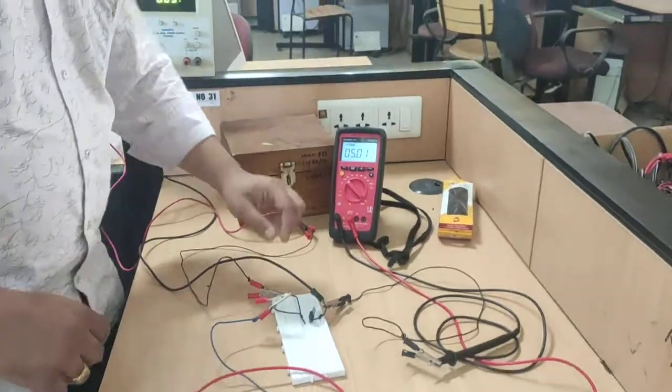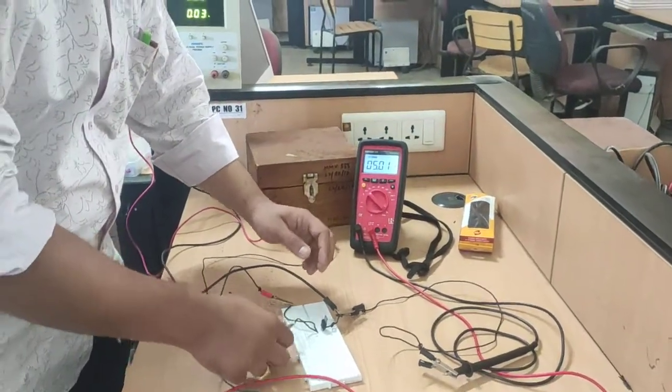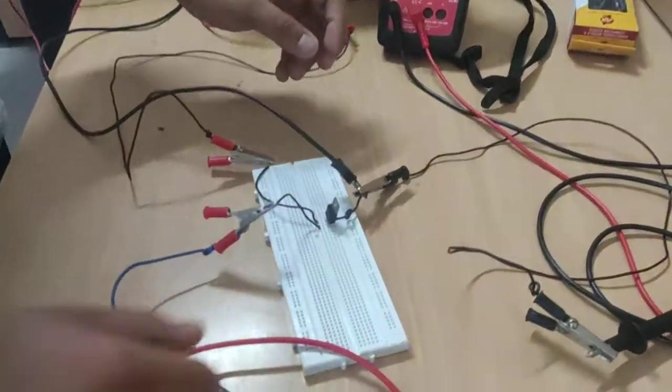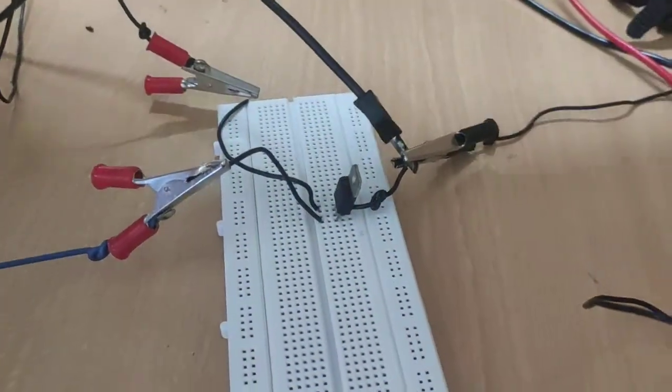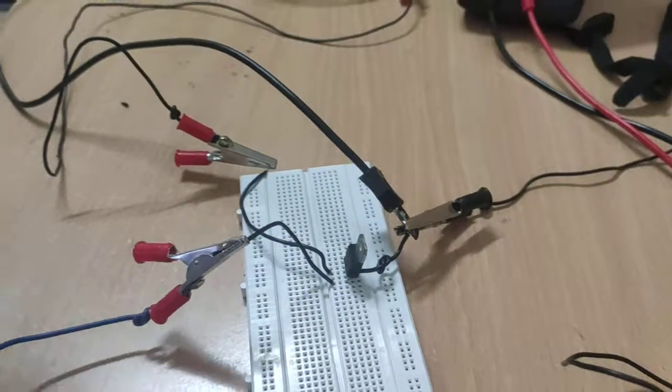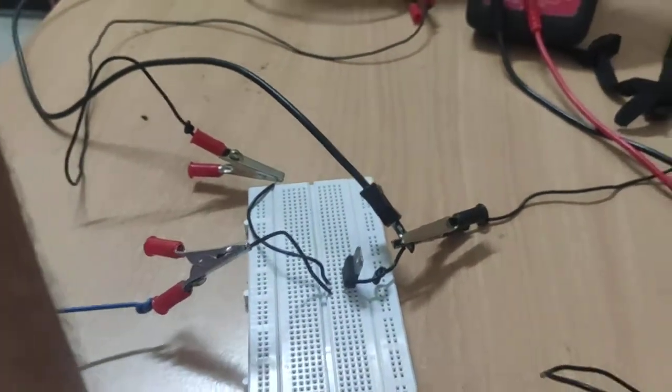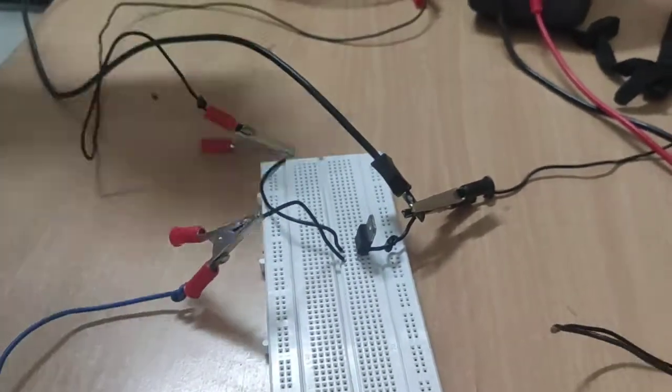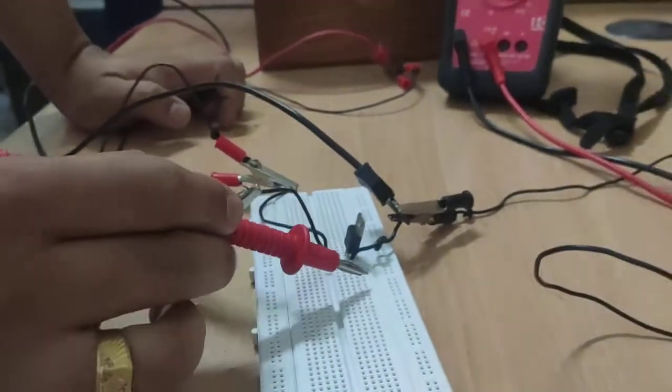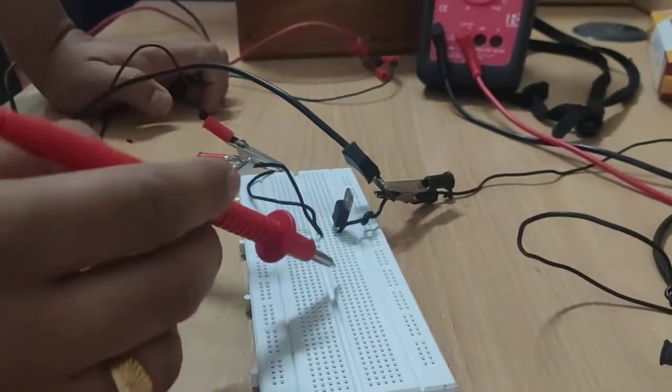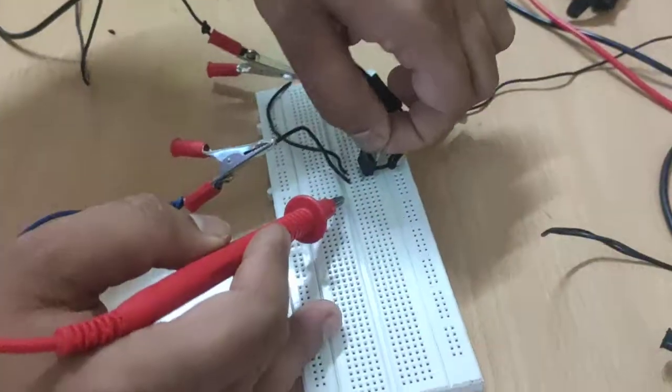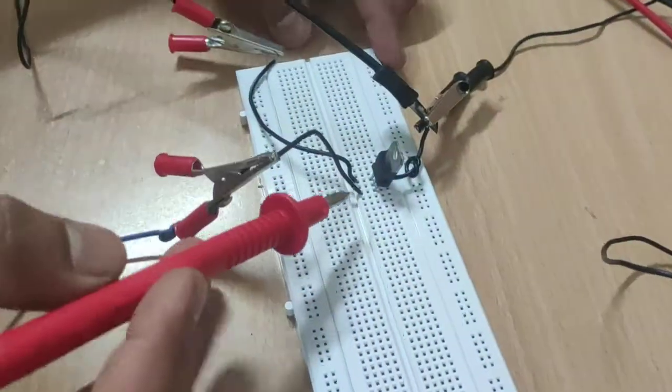So this is our connection on breadboard. So let's discuss breadboard first. In this breadboard we are having these horizontal lines. So these all vertical lines are connected to each other, means I have mounted IC 7805 like this.